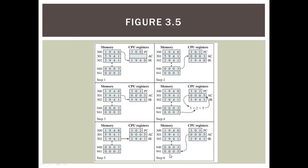In step 6, address 941 now contains 00005, which becomes the AC value. Overall it is repeating the same pattern from step 1 to step 2 and so on, so I think it can be easy to understand.